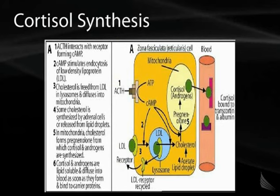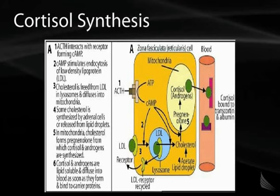In terms of understanding how cortisol is synthesized, cortisol is regulated primarily by stimulation from ACTH from the pituitary. ACTH binds to a G protein-coupled receptor in the zona fasciculata with a Gs subunit, which then stimulates cAMP, which in turn stimulates the LDL receptor to uptake cholesterol. Once cholesterol gets into the cell, it goes down the cortisol synthetic pathway.